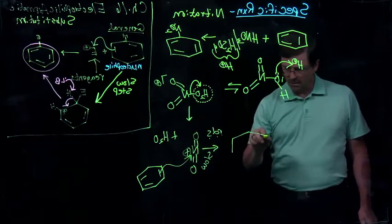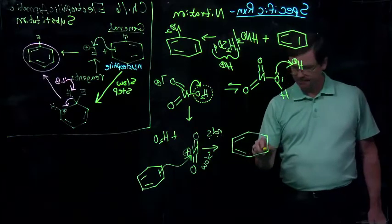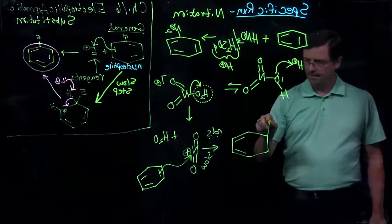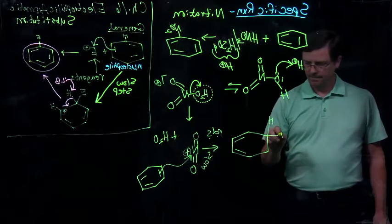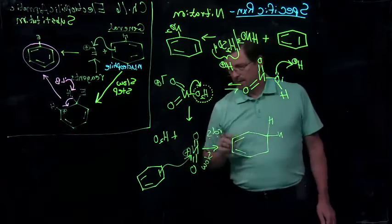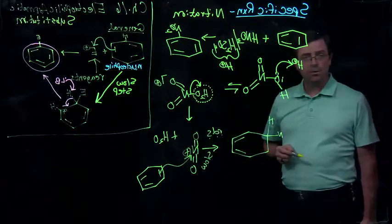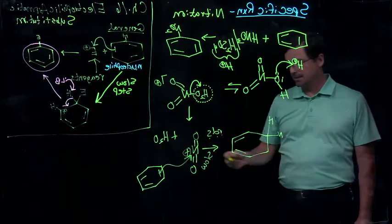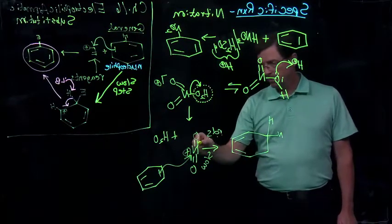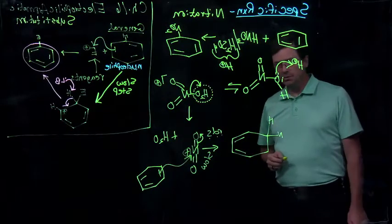Because we have loss of aromaticity. Pi bond attacks the nitrogen. Nitrogen, of course, being a first or second row element, can't exceed the octet. I have it drawn with eight electrons. So I have to lose two electrons.